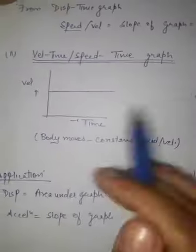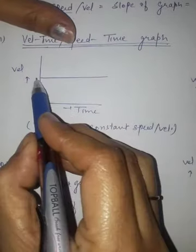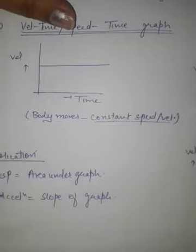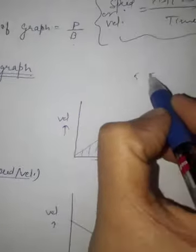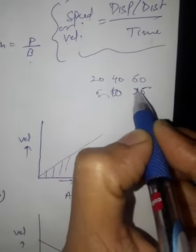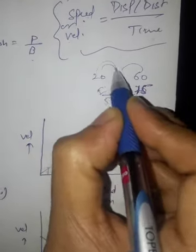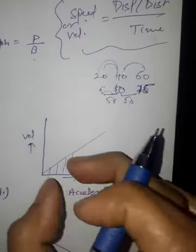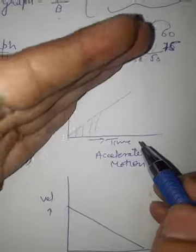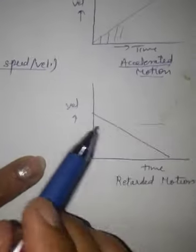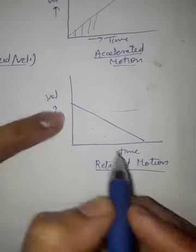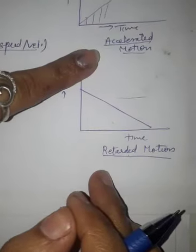Next is the velocity-time or speed-time graph. Different shapes can appear. If the graph is a horizontal straight line, the body is not changing its velocity — it is moving with constant speed or velocity. If you get a straight line going upward, it means equal change in velocity in equal intervals of time — for example, velocity increasing by 20 every 5 seconds — that is accelerated motion. If the velocity is decreasing over time, like when you apply the brakes, it is retarded motion. So: increasing velocity is accelerated motion and decreasing velocity is retarded motion.